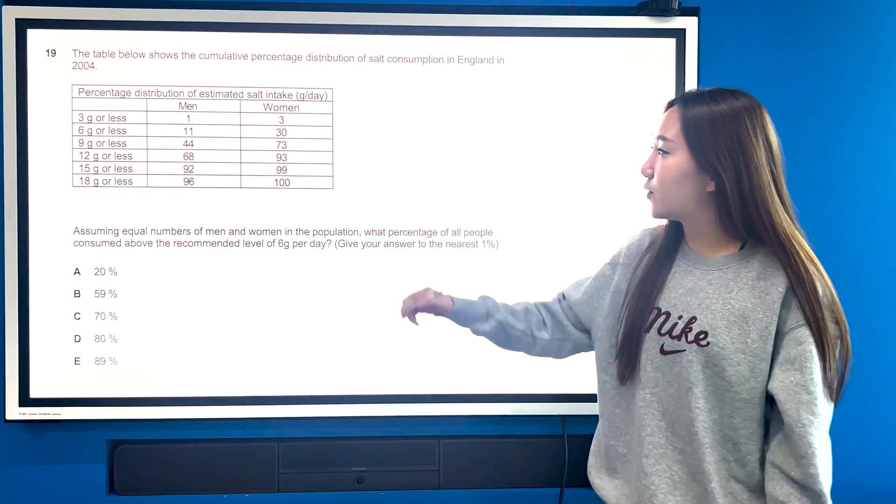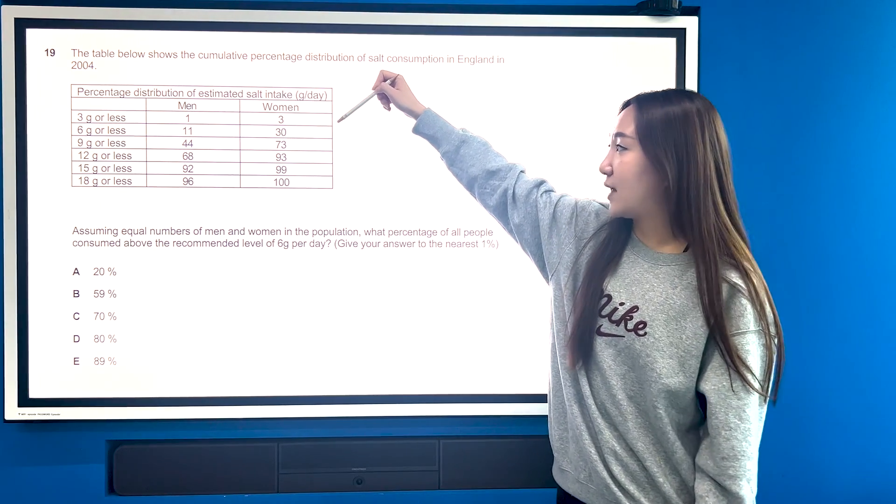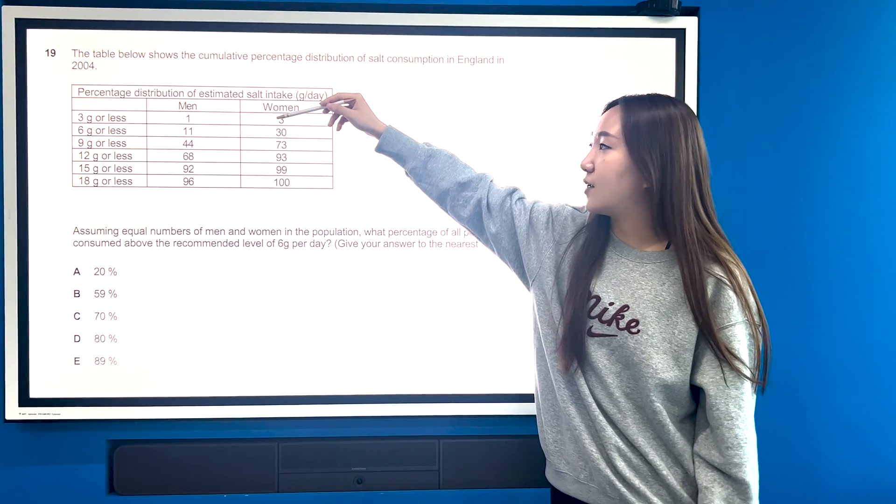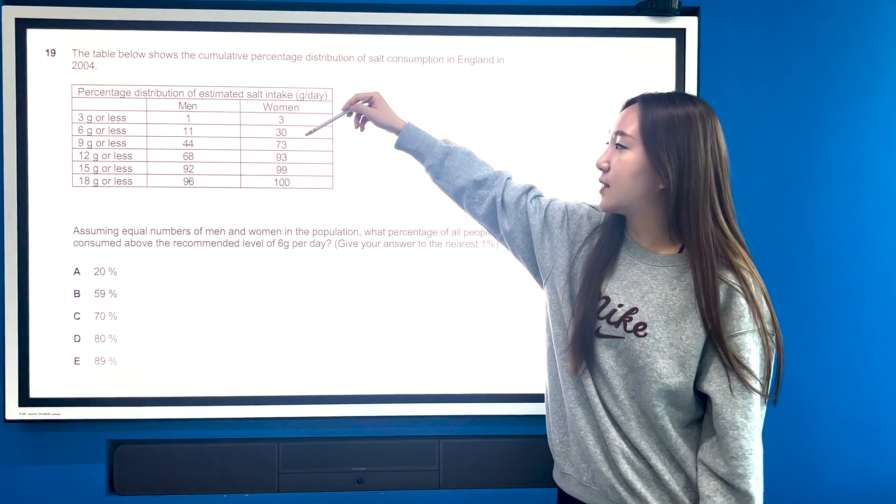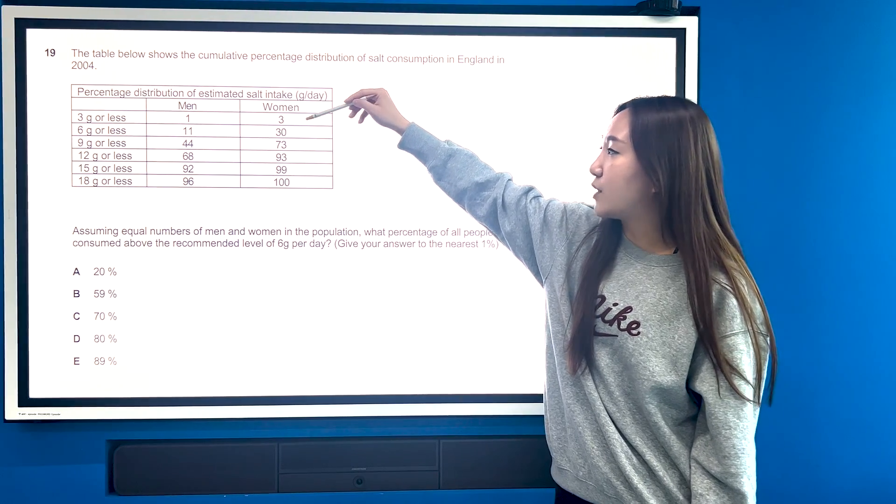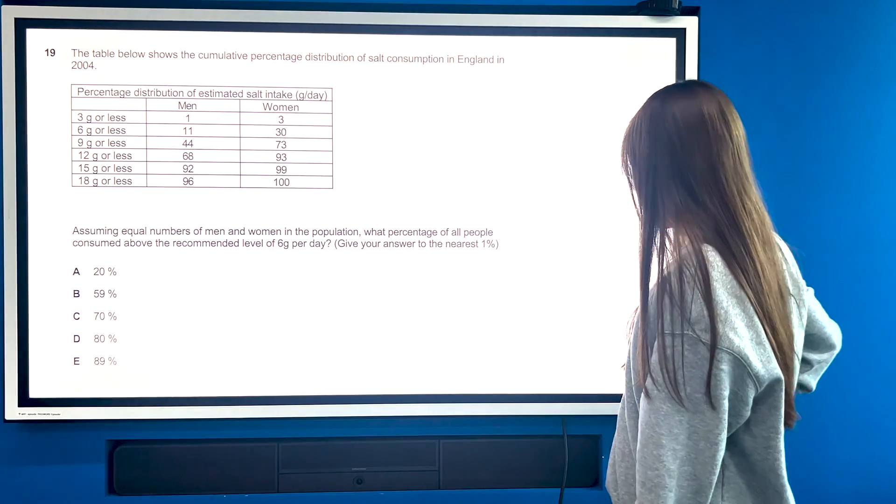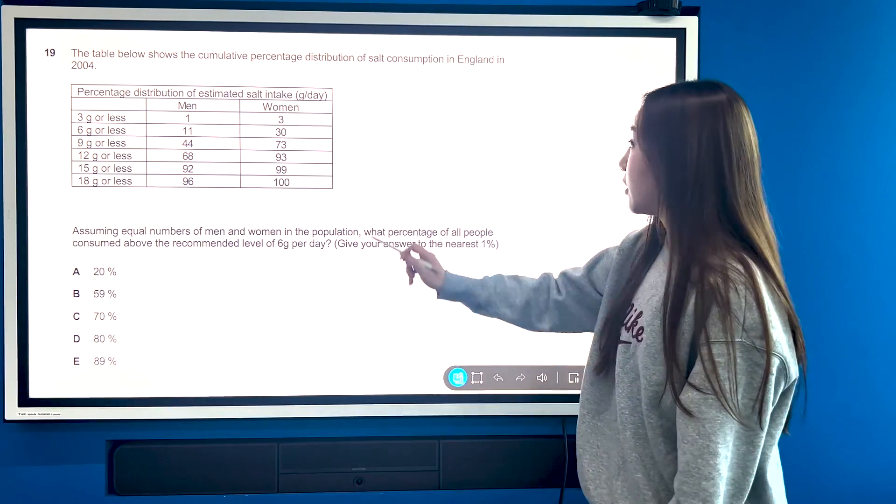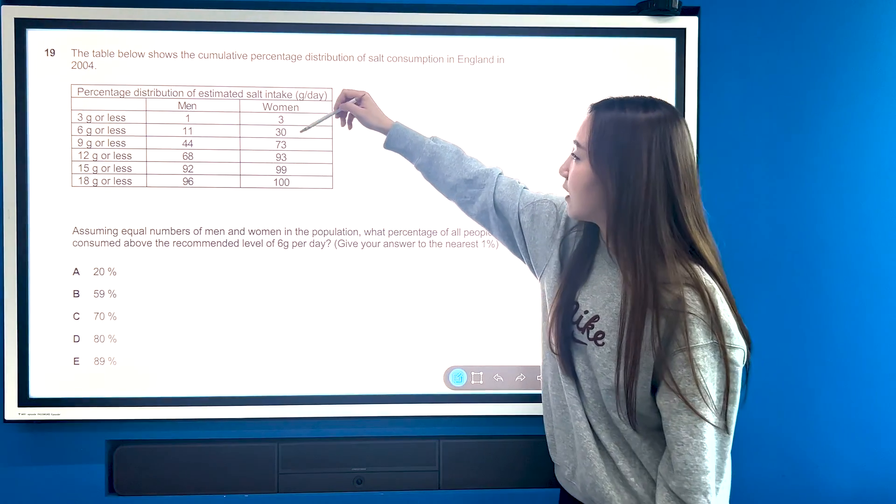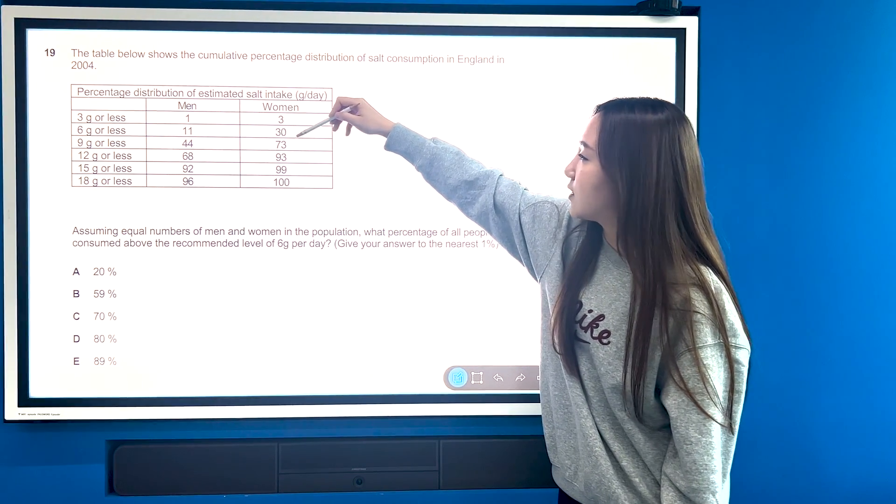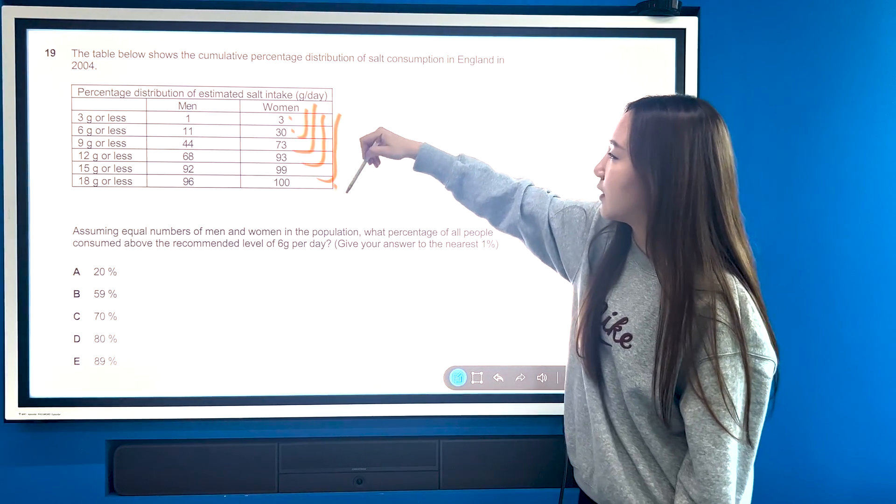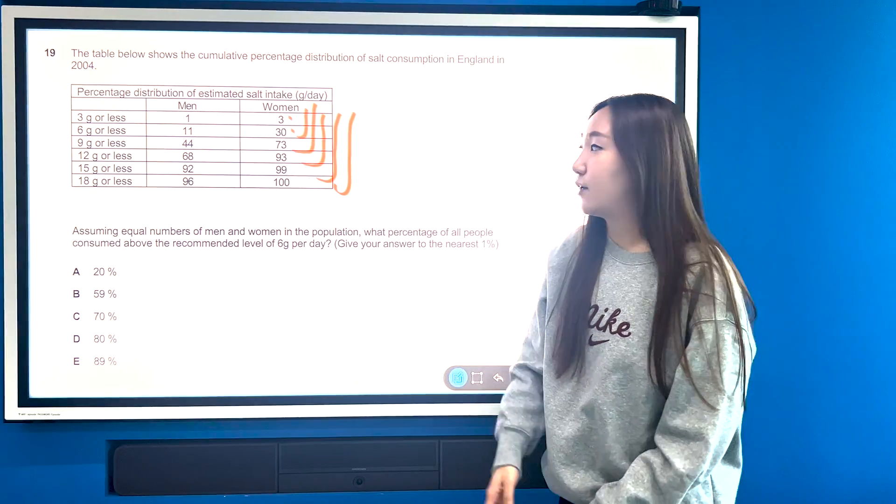So cumulative percentages, obviously how they work is that up to three grams or less is going to be consumed by three percent of women and one percent of men. And then here, six grams or less, 30 percent of women consume six grams or less. Now bear in mind, you do not add these two. These are actually, that is actually going to be the total. So within this category here, six grams or less, 30 percent, this is included in here. Same for here, here, here, here. So I hope that's nice and clear for you.